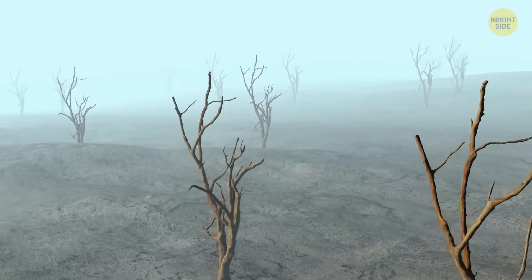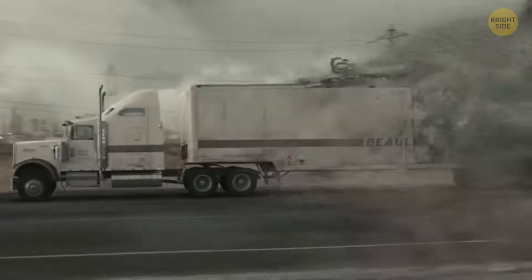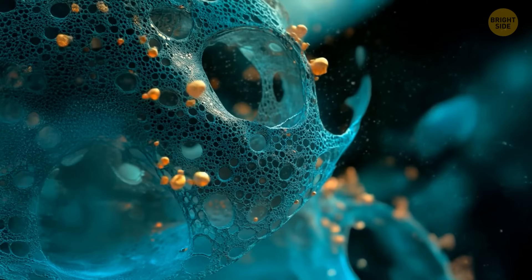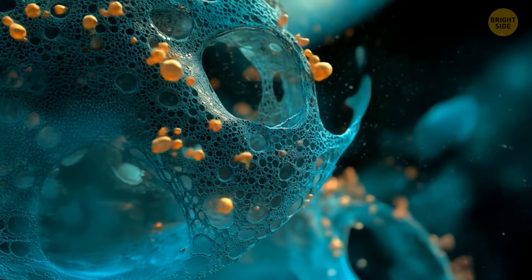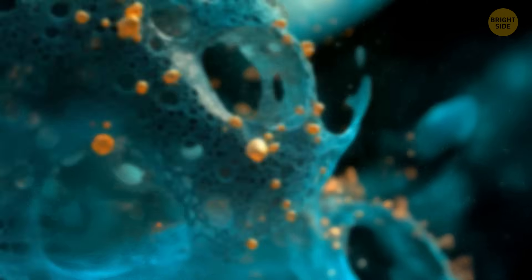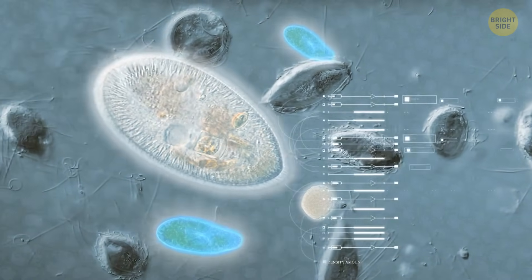Forests? Gone. Crops? Gone. Wildlife? Also gone. The nanobots will break down all organic matter into smaller pieces and transform them into new nanobots. Even bacteria and viruses will get eaten, which might sound great until you realize that ecosystems rely on these tiny organisms to function. Without them, the food chain collapses.